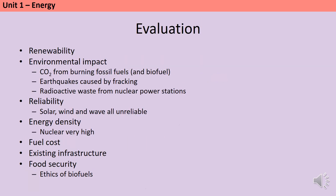In evaluating a resource used to generate electricity, we need to consider advantages and disadvantages. Non-renewable resources will run out, whereas renewable ones won't. Fossil fuel power stations release carbon dioxide, a greenhouse gas that causes global warming. Burning biofuels also releases carbon dioxide; however, that carbon dioxide was only recently absorbed by the maize or sugarcane plants, so biofuels are sometimes referred to as carbon neutral — no new carbon dioxide is being released.